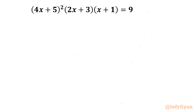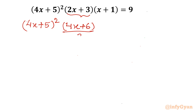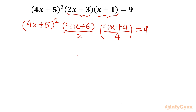Let's get started by rewriting the equation. I will write (4x+5)² unchanged. For the second bracket, I will multiply with 2 and divide by 2, so it becomes (4x+6)/2. Similarly, the third bracket (x+1) I multiply with 4 and divide by 4, giving (4x+4)/4. Now you can see 4x+4, 4x+5, 4x+6 — these three brackets are in number line order.